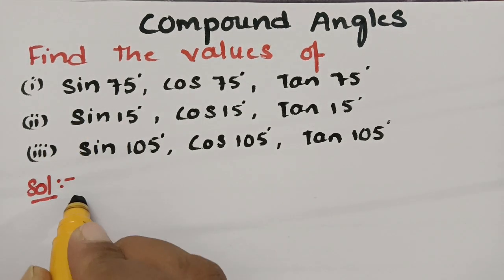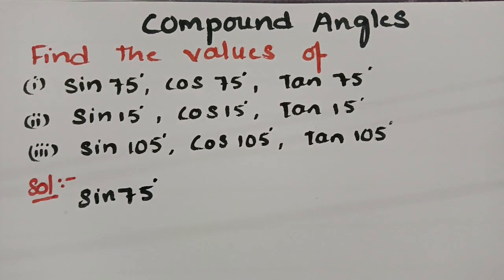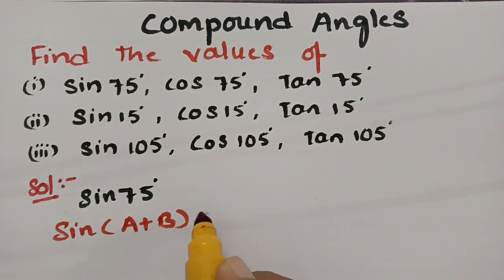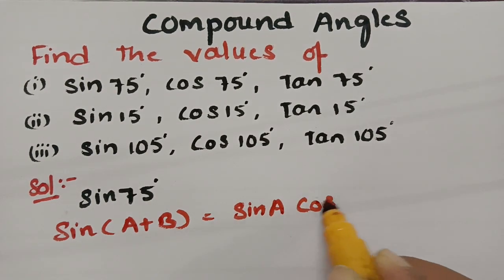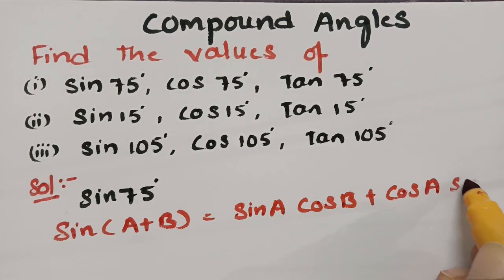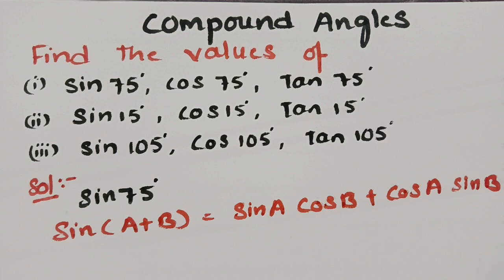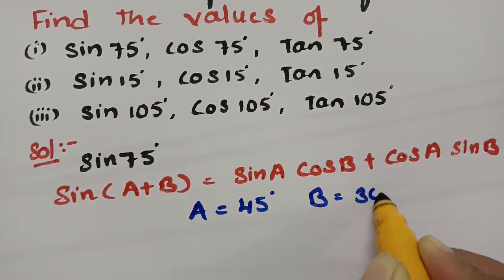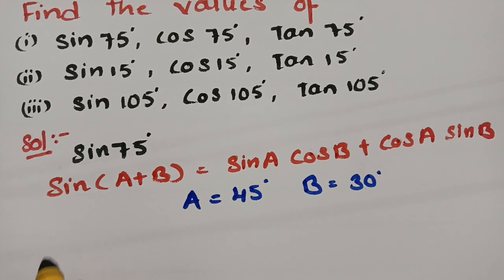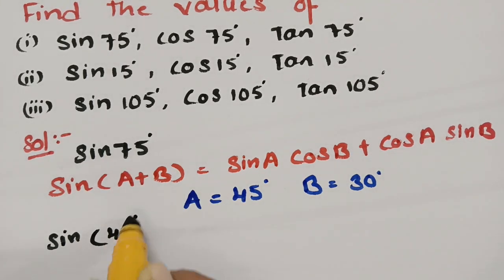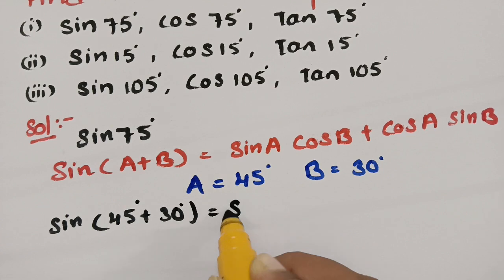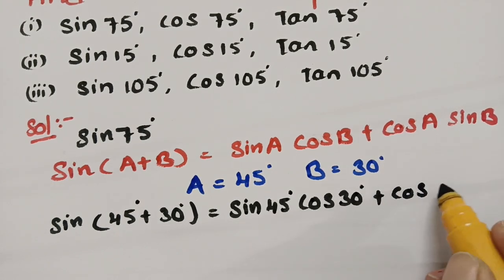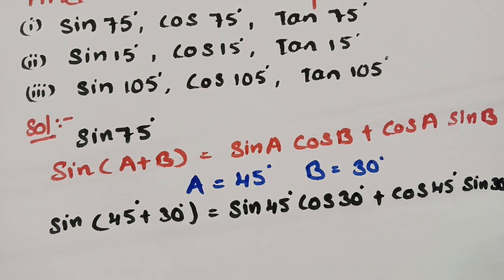Using the compound angle, the first solution is for finding sin 75 degrees. I am using the formula sin of A plus B, which is equal to sin A into cos B plus cos A into sin B. In this, I am keeping angle A equal to 45 degrees and B equal to 30 degrees. If I substitute and proceed, this will be sin of 45 plus 30, which becomes sin 45 degrees into cos 30 degrees plus cos of 45 degrees into sin of 30 degrees.